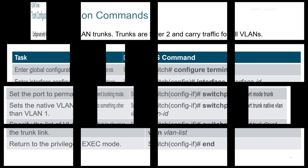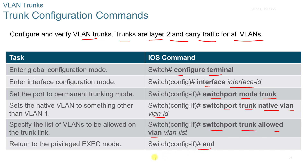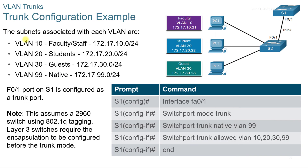3.4 VLAN Trunks. Trunks are layer 2 and carry traffic for all VLANs. The trunk configuration commands are: config terminal, specify the interface ID, use switchport mode trunk, switchport trunk native VLAN with your ID, switchport trunk allowed VLAN, then return to privileged mode. In the configuration example, subnets associated with each VLAN use the 172.17.10.0, 20.0, 30.0, and 99.0 /24 networks — VLAN 10 for faculty, 20 for students, 30 for guests, and 99 as native. The F0/1 port on S1 is configured as a trunk port, assuming a 2960 switch using 802.1Q tagging. Layer 3 switches require encapsulation to be configured before trunk mode.